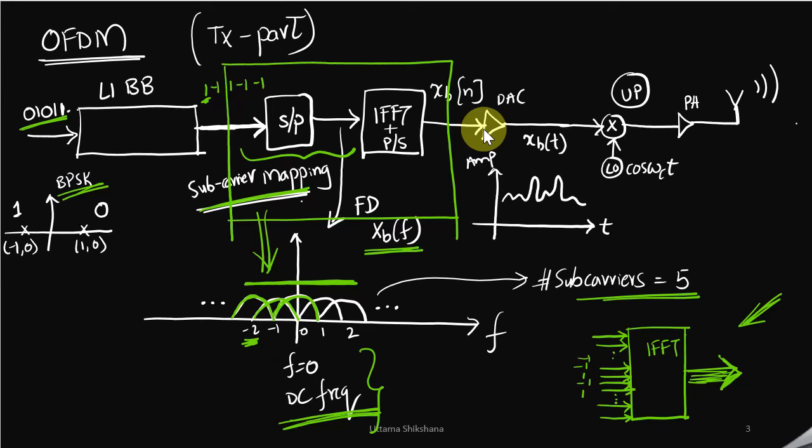All the samples will be mapped from minus 2 to plus 2. Then we will do IFFT operation, and after DAC I will get the time domain baseband signal xb(t). The time domain response of this spectrum would look like this.